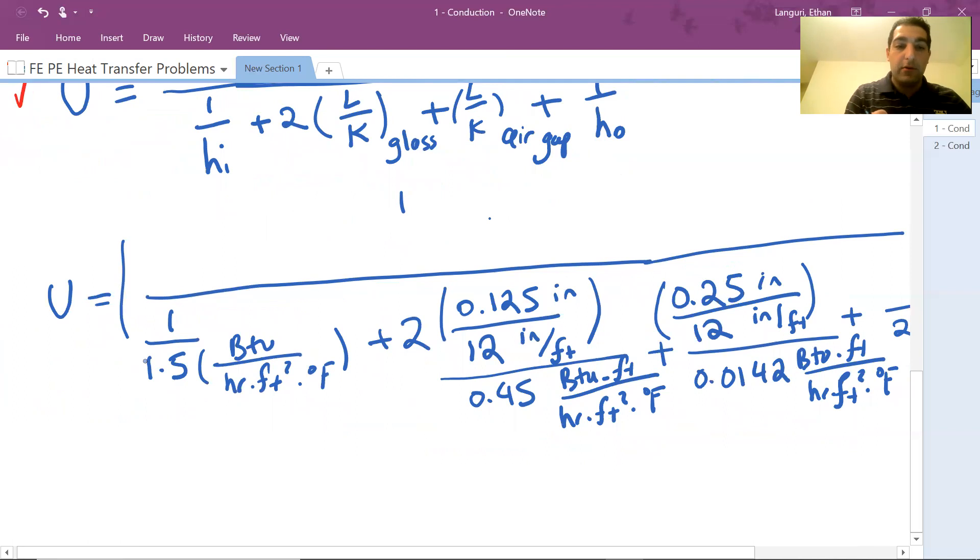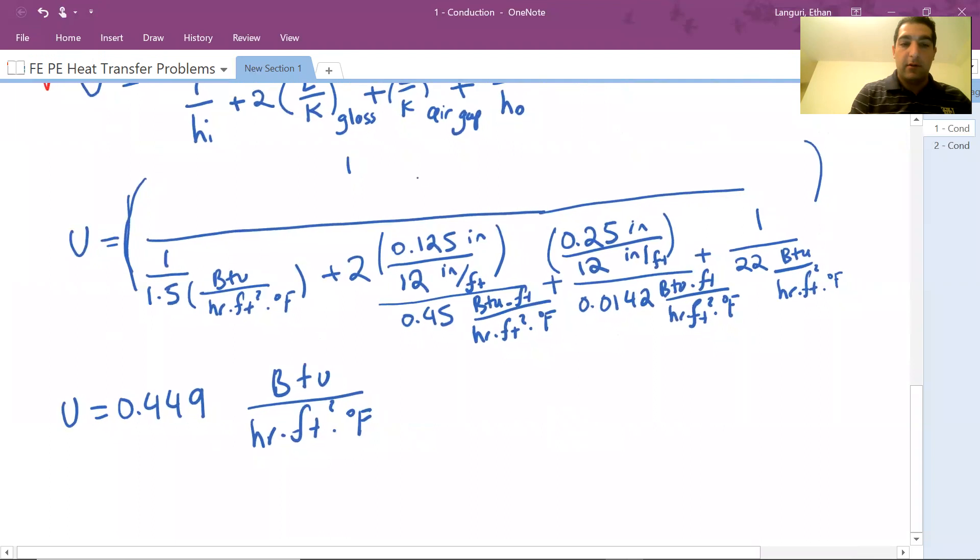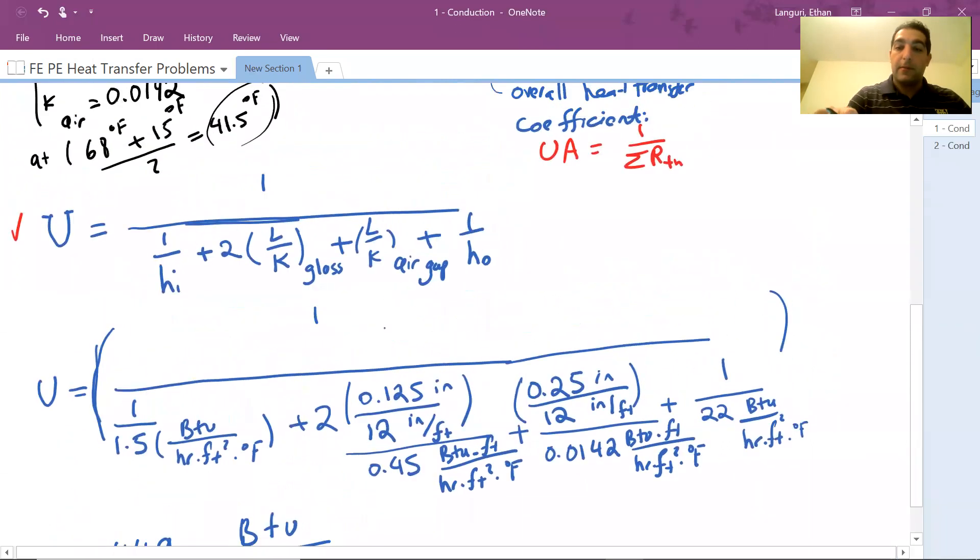Now we need to use your calculator and find the total value for U. If you do this, your U will be 0.449, and the unit for U must be BTU per hour foot squared degree Fahrenheit. Let me make it smaller so everyone can see the whole thing. So this is my overall heat transfer coefficient.